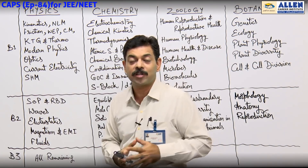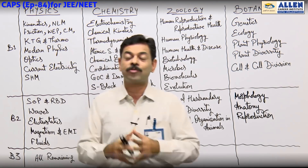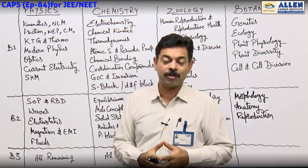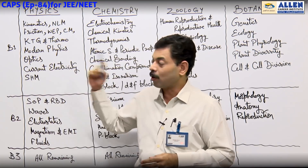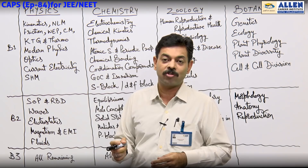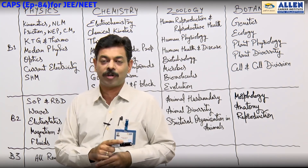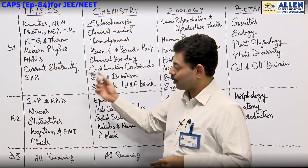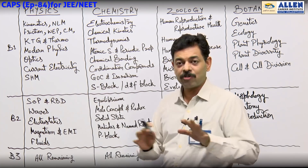If you ensure Physics Block One well, you can consider achieving almost 50 to 60 percent. There won't be any problem in achieving 50 to 60 percent score in Physics. The rest depends on destiny — it could go up to 70 percent from Block One in past years. Block Two is equally important; SOP, RBD easy questions are there.